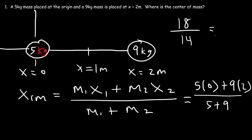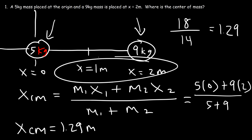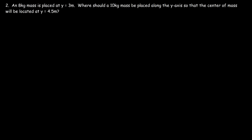So it's going to be 18 divided by 14, which turns out to be about 1.29 on the x-axis. That's the position of the center of mass, and as you can see it's closer to the 9 kilogram mass as opposed to the 5 kilogram mass — it's between 1 and 2.